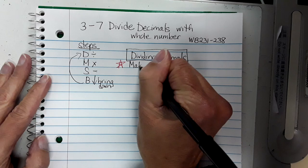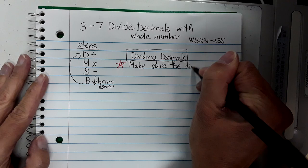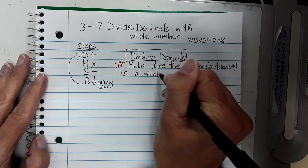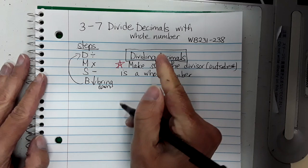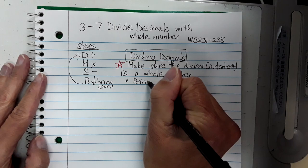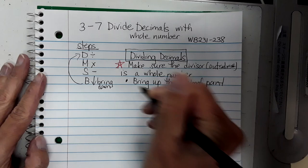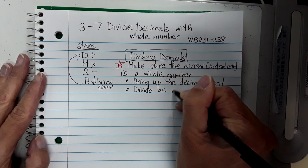Big star — this is important. Make sure the divisor, meaning the outside number, is a whole number. Today they are going to be; tomorrow they will not be. Once you make sure that's a whole number, what you do is you bring up the decimal point, and then divide as normal.